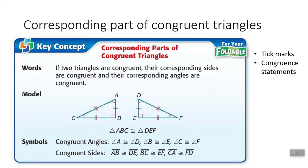This is actual congruence — same size, same shape. Since the letter A is written first and the letter D is written first, that means those two angles are congruent. You'll see in the picture that angle A has one little arc mark and angle D also has one arc mark, so A and D are congruent. Angle A is congruent to angle D.